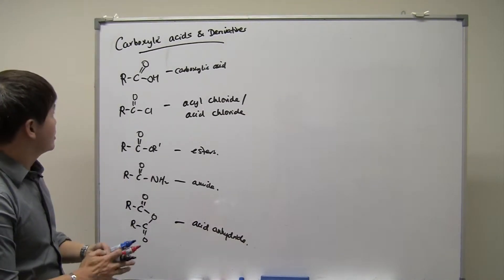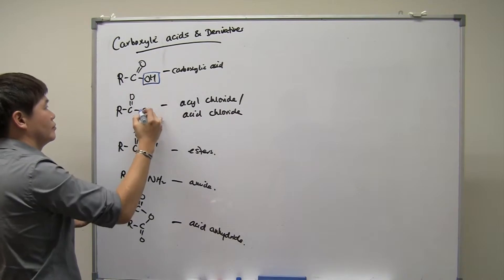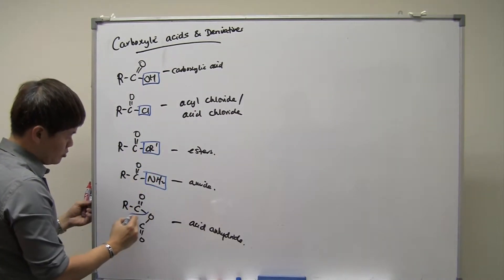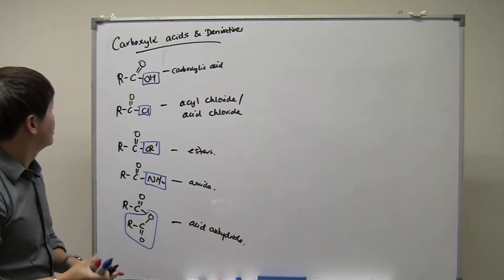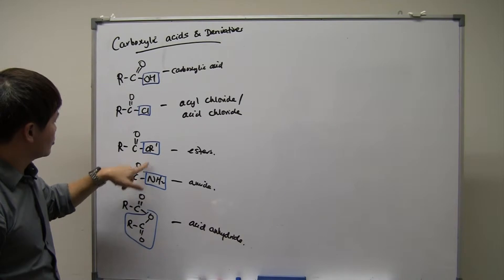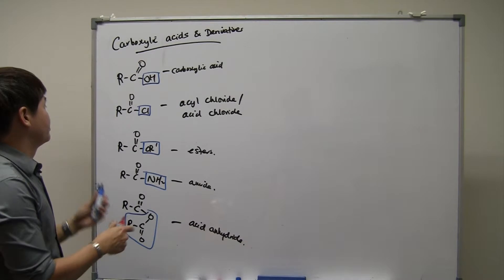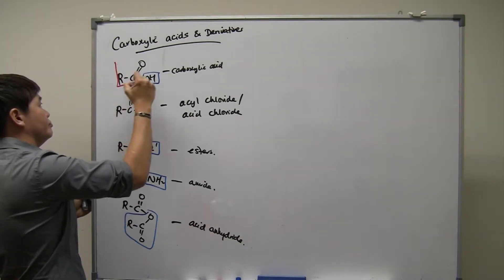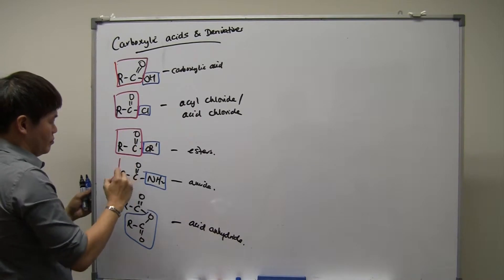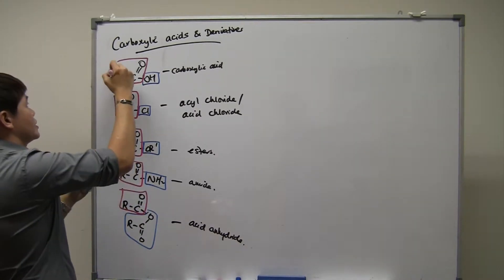You notice the acids and derivatives have got one thing in common. What differs is only the group behind here. I'm going to draw this in blue. This is the group that is different. Acid, this group is an OH group. This group is a Cl group, OR group, NH2 group, and a carboxylate group. What is the same is on the left hand side. This group is the same. It repeats itself. And this group is called the acyl group.